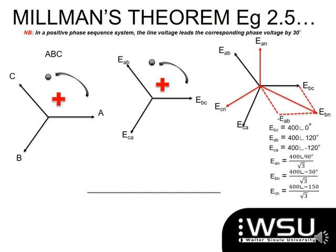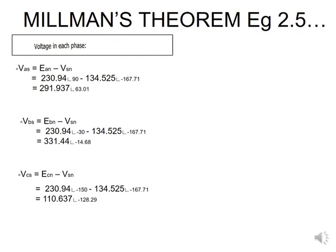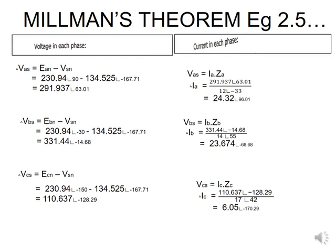I write all the voltages on the side, remembering the square root of three relationship between line and phase voltages. I then substitute everything into the Millman formula to get VSN. The next step is to calculate the load phase voltages VAS, VBS, and VCS, followed by calculating the line currents using Ohm's law.